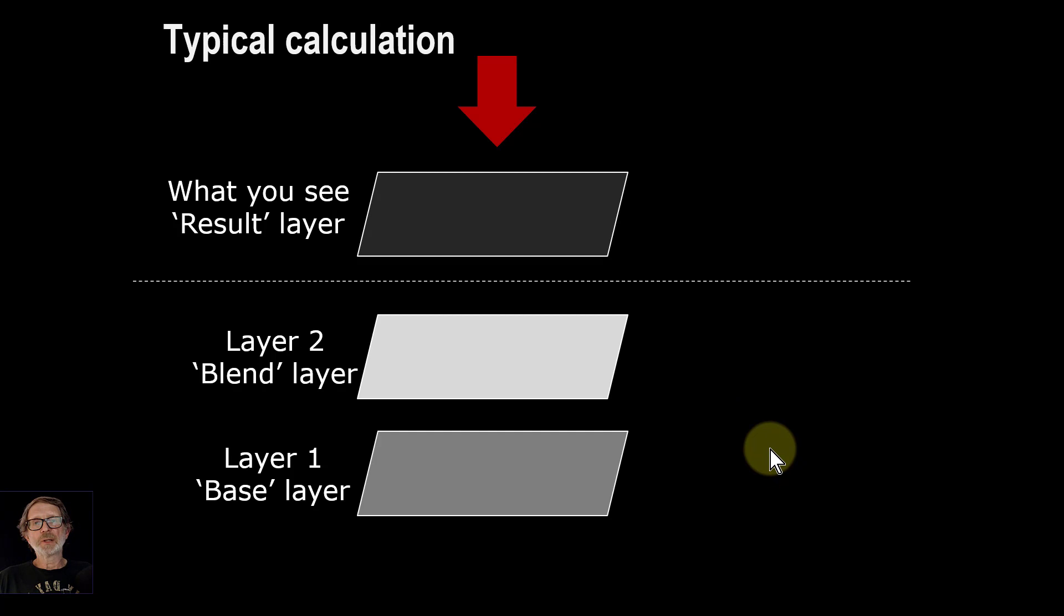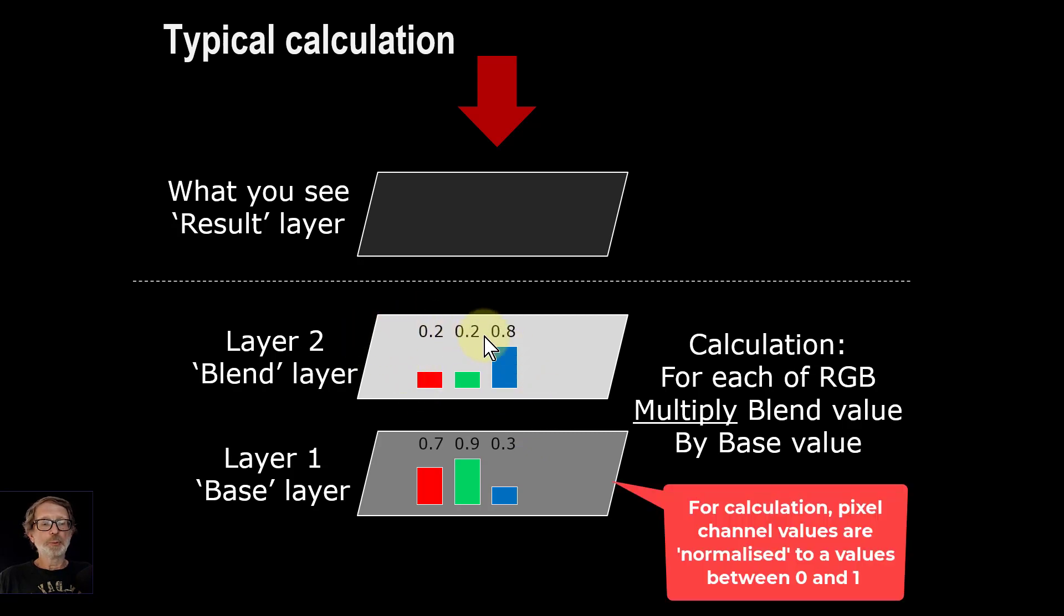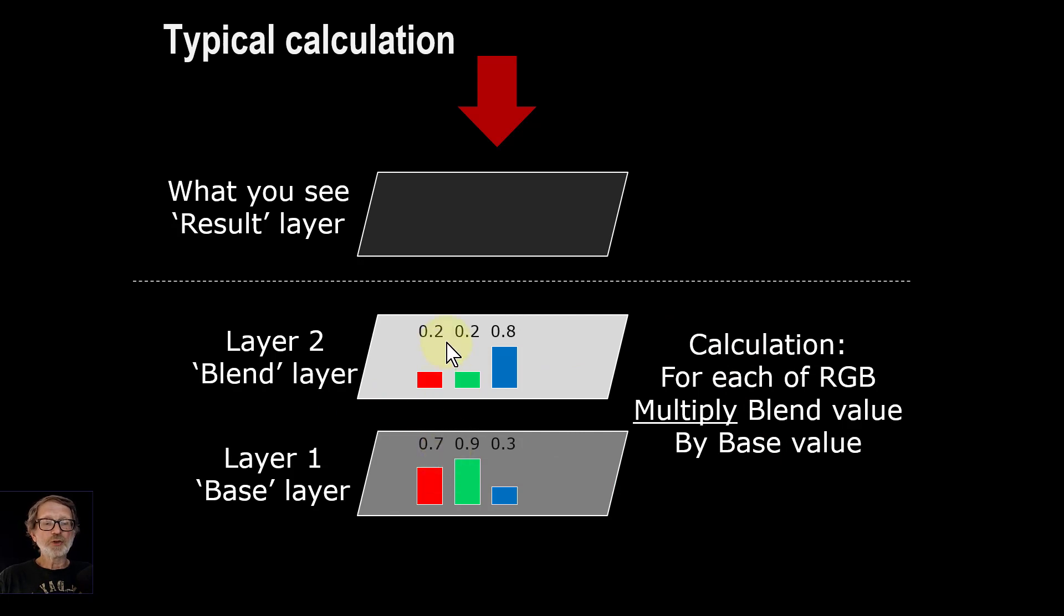Calculations are often done in other ways. So for example, this is a pixel level calculation. So for the multiply blend, you get values like this: 0.7, 0.9, and 0.3, and here you might get up here 0.2, 0.2, and 0.8. And then the multiply blend literally multiplies those, so you get the base value times the blend value, and that gives us a result value. And that gives us what comes up here. So it's a calculation for each of the individual channels of red, green, and blue.